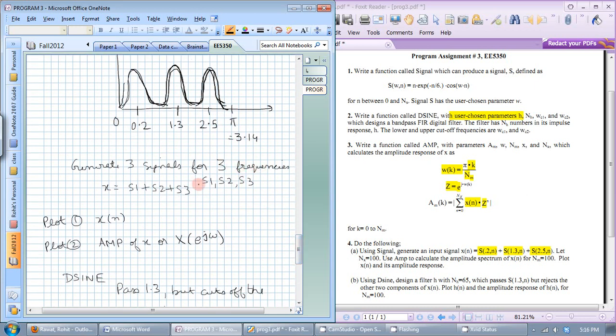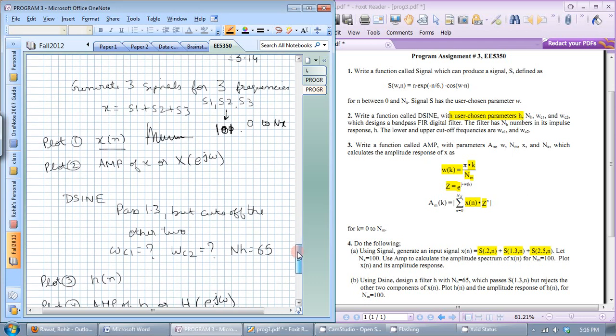You generate three signals for three frequencies S1, S2 and S3 each one of them will have 101 elements because 0 to nx that's 0 to 100 that's 101 element so that will produce x of n. The actual signal x will probably look very messy it will not have any symmetries or uniformness but once you run the amp function on x of n you should see something similar to this. So make sure you get this much working and debug your amp function or your x of n function.